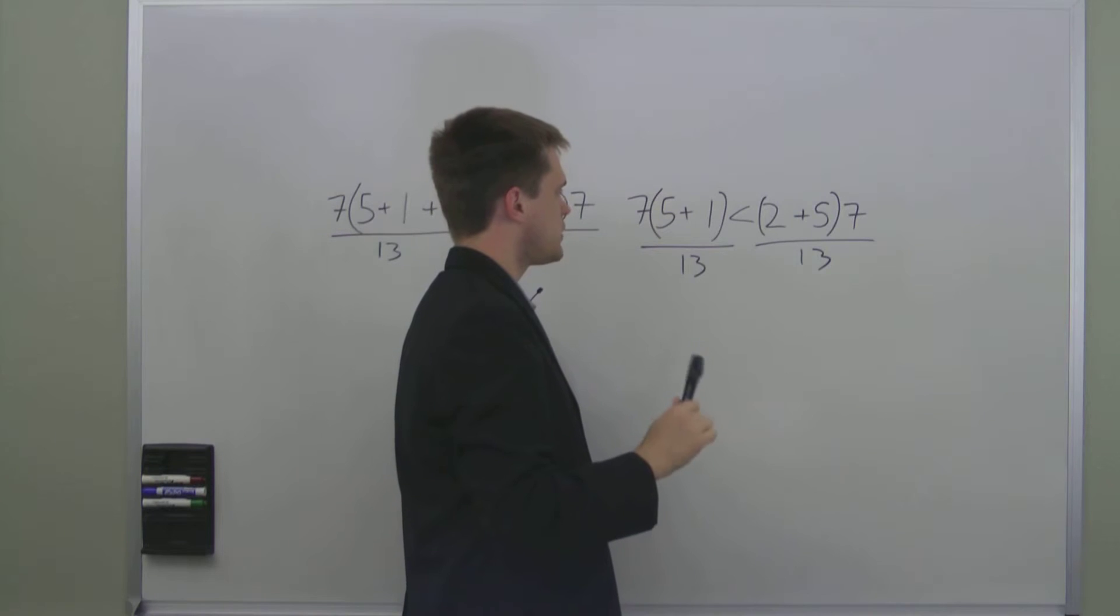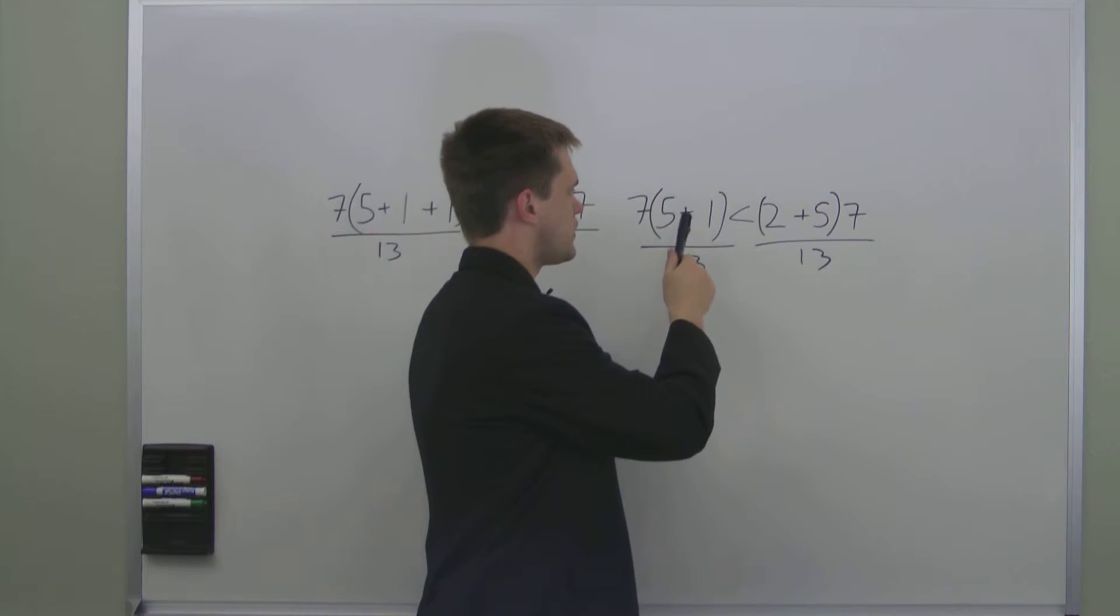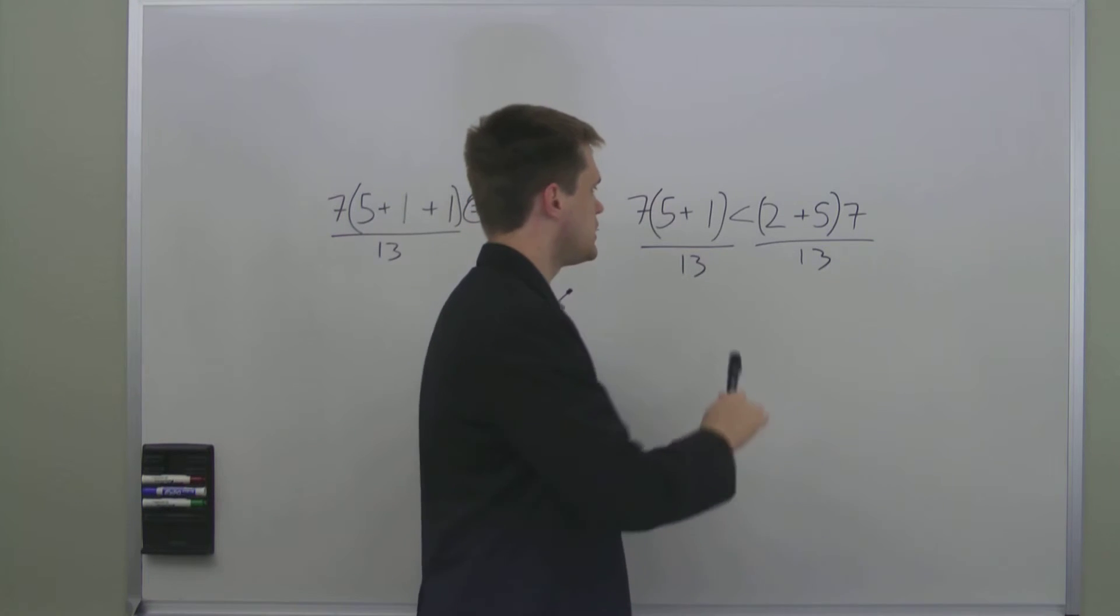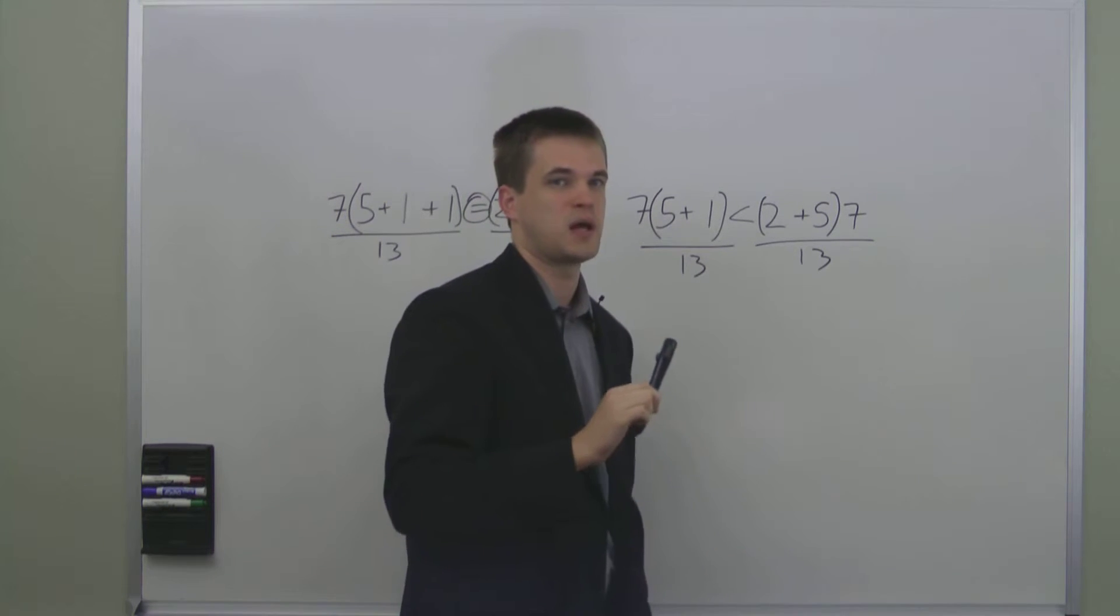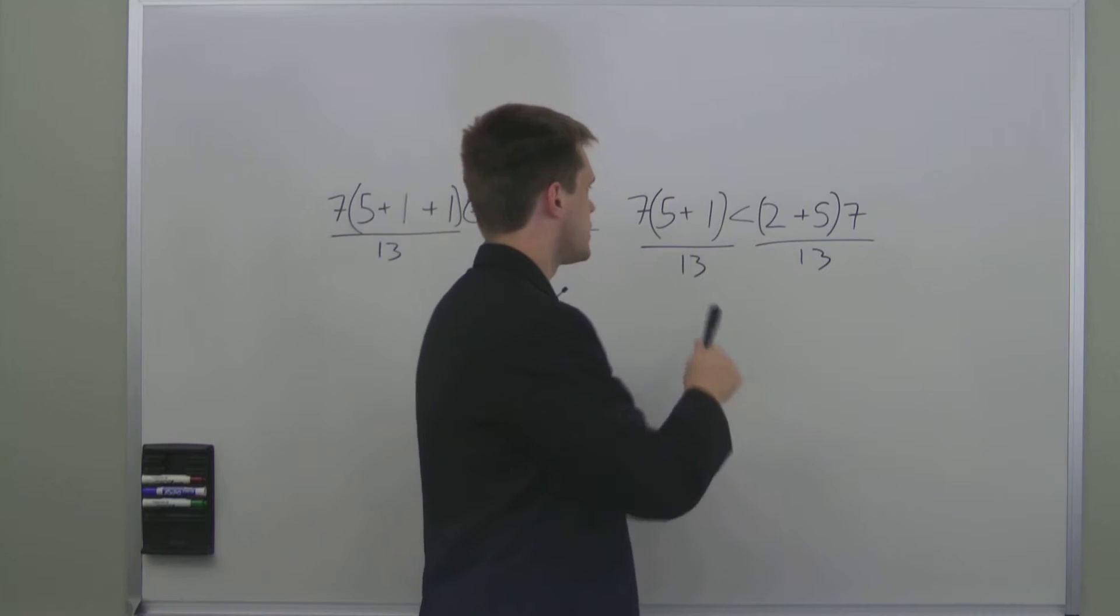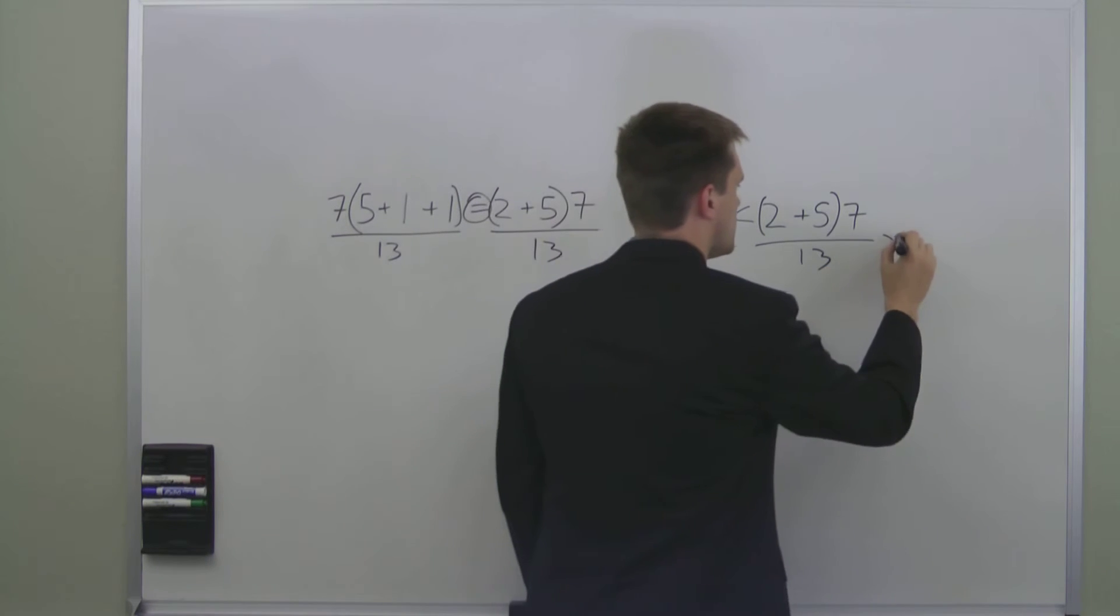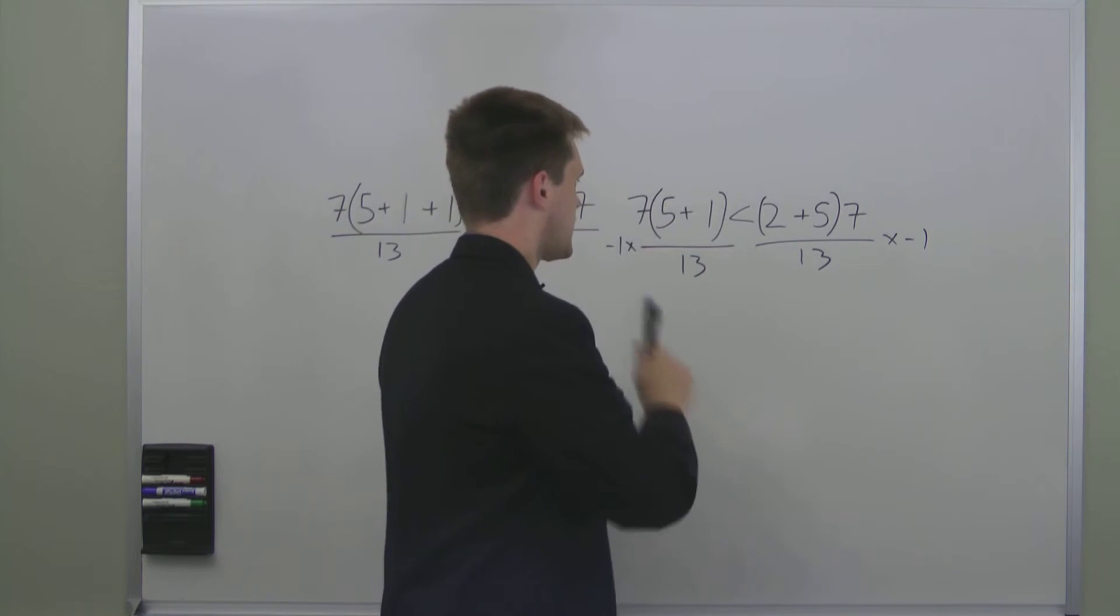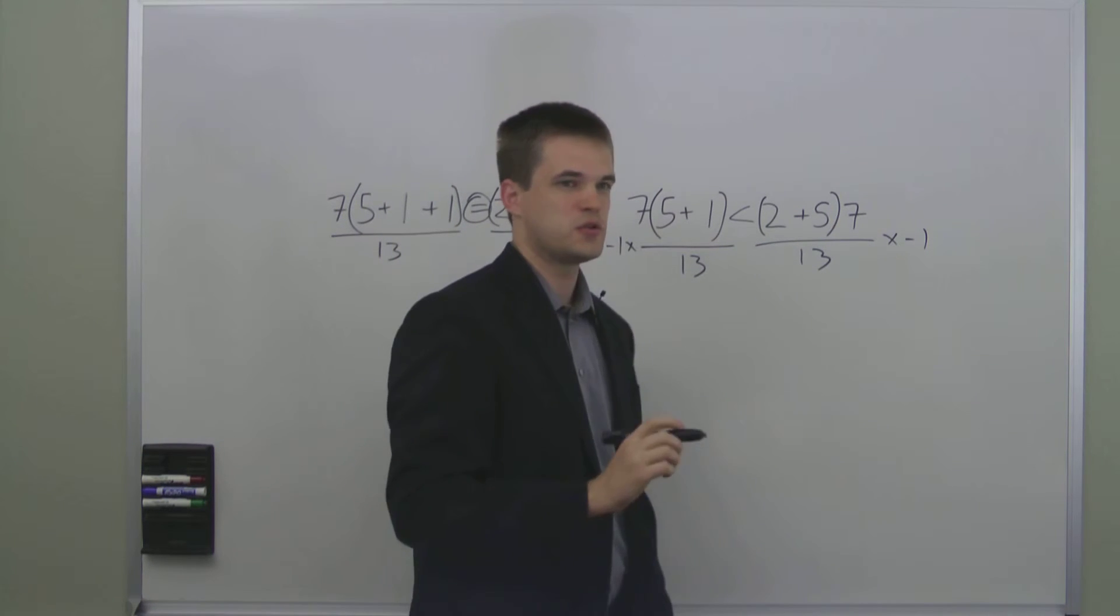The one thing that we can't do with inequalities without changing them that we can with equations is multiplying or dividing by a negative number. So if we wanted to multiply both sides of this inequality by negative 1, that would make it untrue.